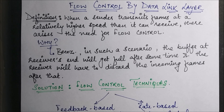If the receiver is not able to receive the frames, they will be discarded — there will be data loss, and that we do not want. To avoid that data loss, to avoid frames being lost, we use flow control techniques. This is the function of the data link layer and that is why flow control is required.